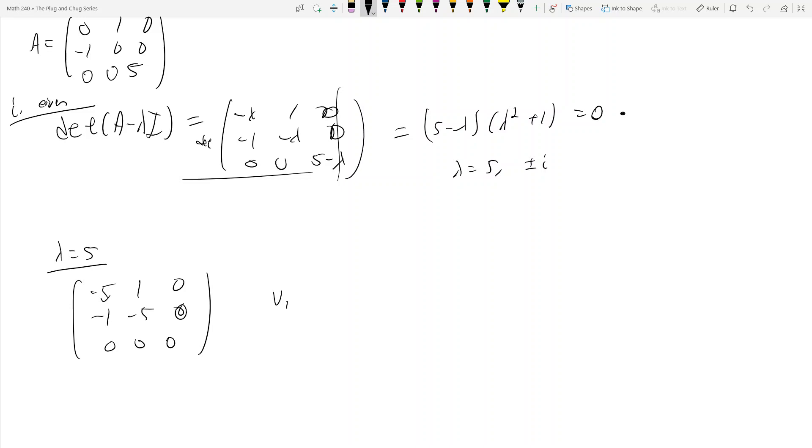And it looks like then v1, I can just pick 0, 0, 1, and that will give me an eigenvector, right? And so then the solution corresponding to this is simply e to the 5t times 0, 0, 1, okay?